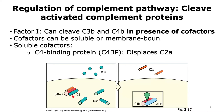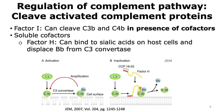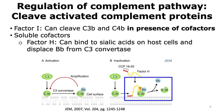Factor H is another factor that is able to regulate complement activity and helps Factor I in cleaving C3B. Factor H can bind to sialic acids present on host cells, and this binding results in the displacement of Bb from the C3 convertase. In the alternative pathway, the complex of C3B and Bb results in C3 convertase activity. When Factor H binds to this complex, it displaces Bb and allows Factor I to bind to C3B and cleave it, forming the inhibitory iC3B.